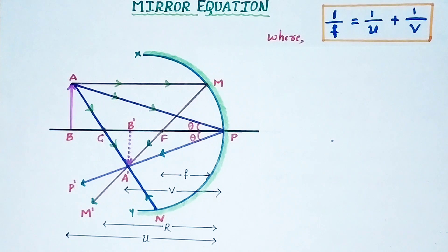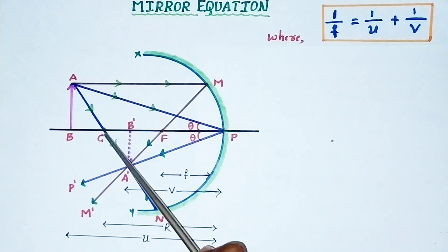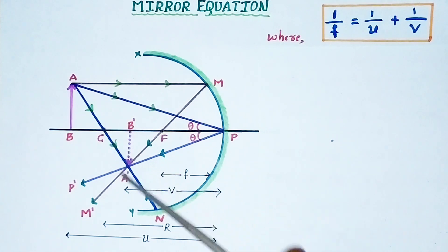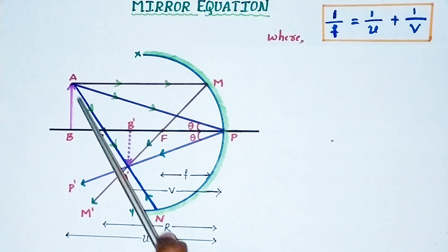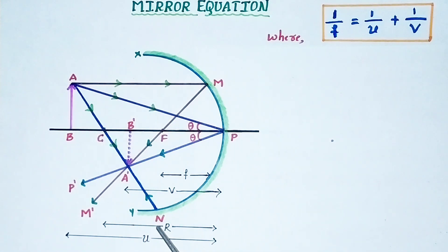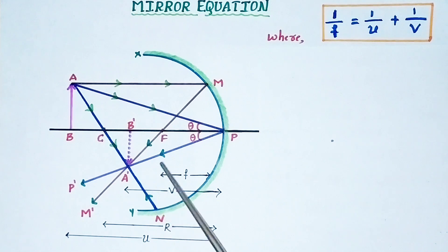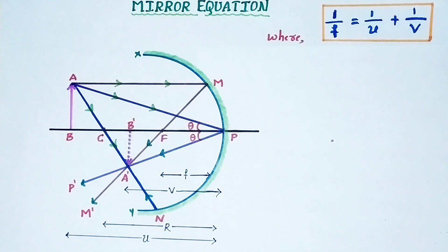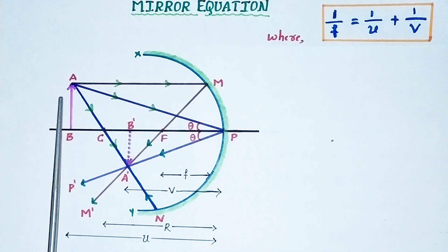The third incident ray AN passes through the center of curvature — this is the third rule — so the reflected ray retraces the same path but in the opposite direction. AM, AP, and AN are the incident rays; MM', PP', and NA' are the reflected rays. After reflection, all three reflected rays converge at point A'B'. So A'B' is the real and inverted image of object AB.